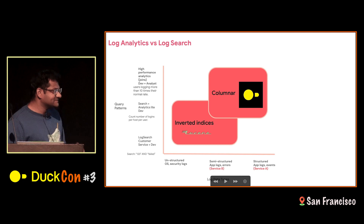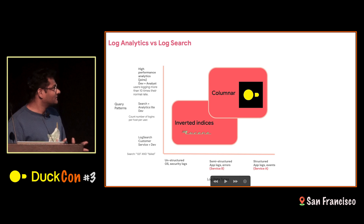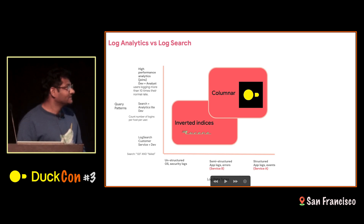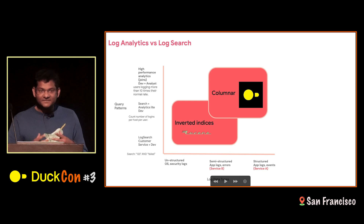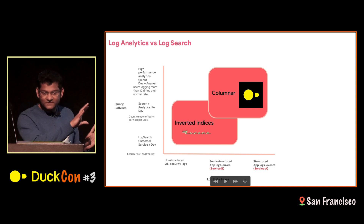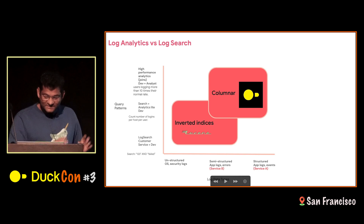For something like service A, which has structured logs or events, where you're doing high-performance analytics queries — simple group-bys, aggregations, and count stores on a few columns — columnar stores are really great, like DuckDB. Whereas if you're doing a lot of searching or some lightweight aggregations and counts, you want to use something like Lucene. These are two different worlds, and these two different storage engines have different performance characteristics and IO characteristics.